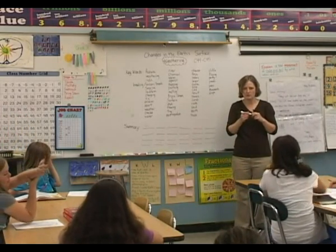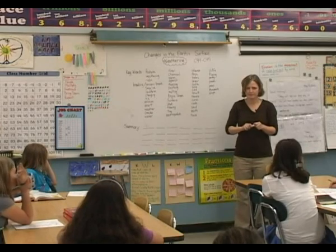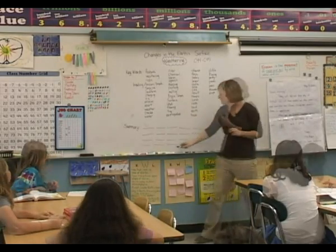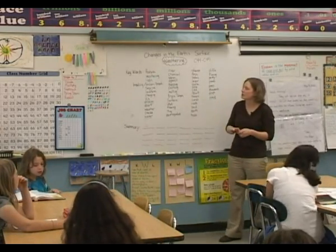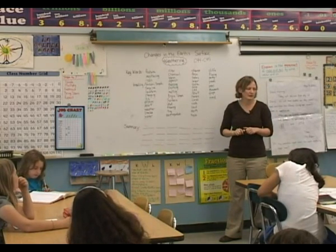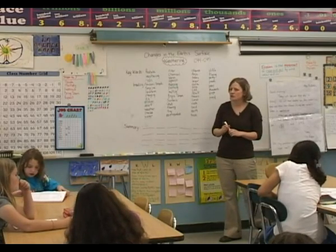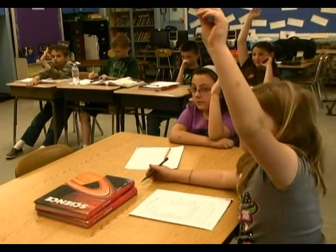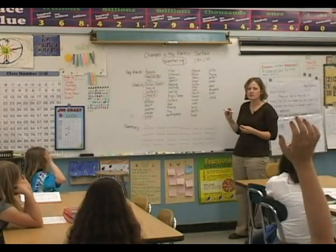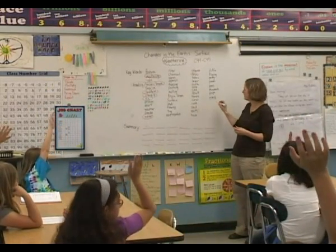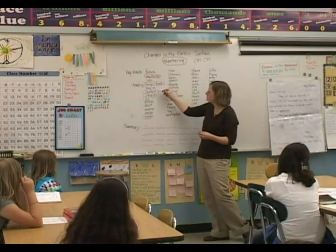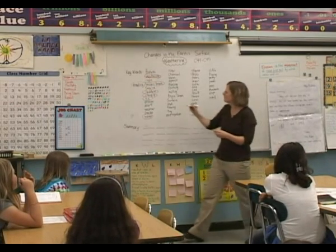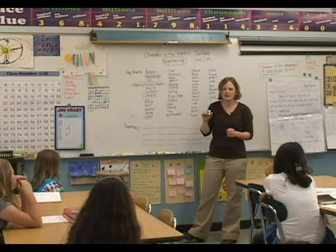Now, what we're going to do is pick out the ten most essential ones by voting. Any word that gets a unanimous vote that it is very, very important for our summary, we're going to circle until we get ten words. Keep in mind, our topics are changes in the Earth's surface — that's one big idea — and what weathering is. How many kids think features would be a key word? How about weathering? How about rocks? Wind. Erosion and years. I hear rocks, erosion, and years. Erosion.